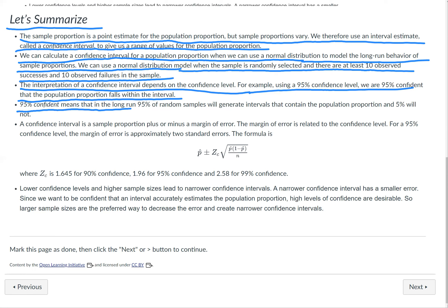95% confident means that in the long run, 95% of random samples will generate intervals that contain the population proportion and 5% will not contain the population proportion.